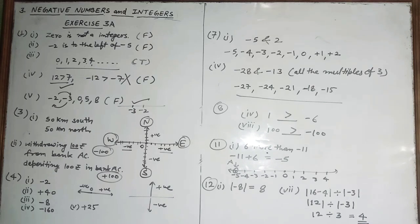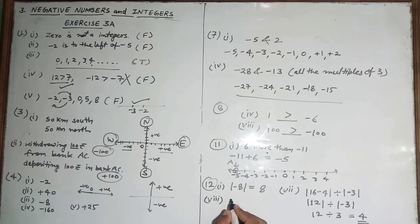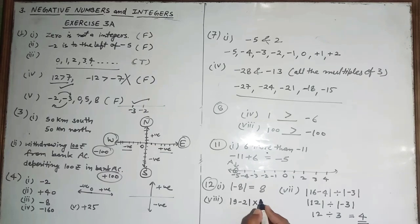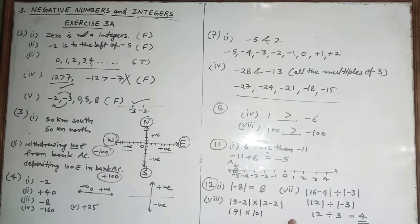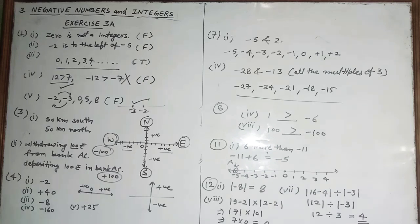One more part: mod of (9 minus 2) multiplied by mod of (2 minus 2). First simplify inside: mod 7 multiplied by mod 0, which gives 7 multiplied by 0, so the answer is 0. Like this you can solve the other parts of this exercise.